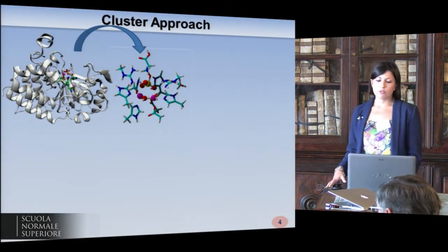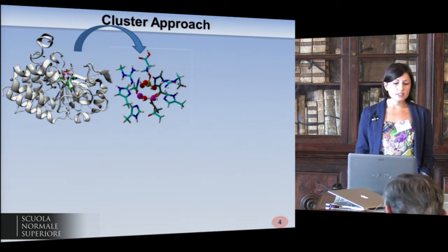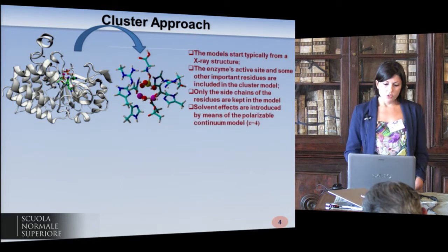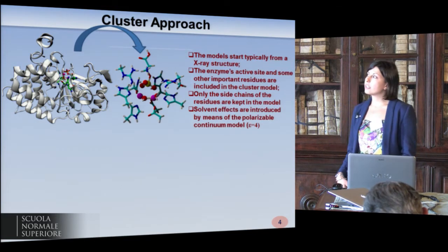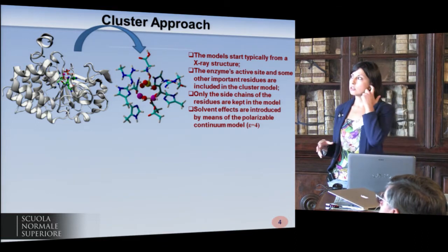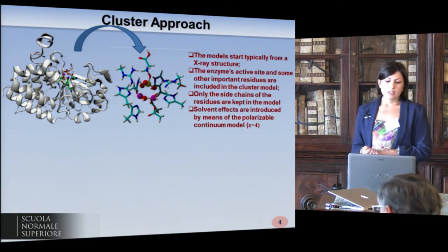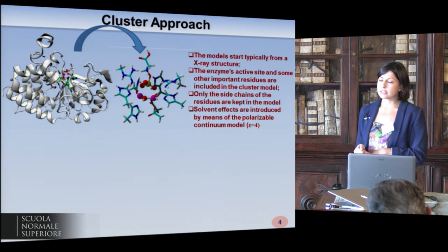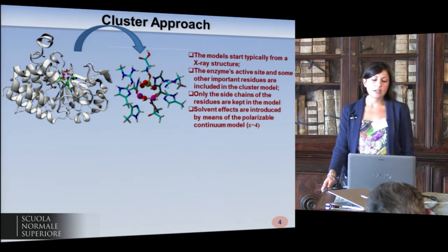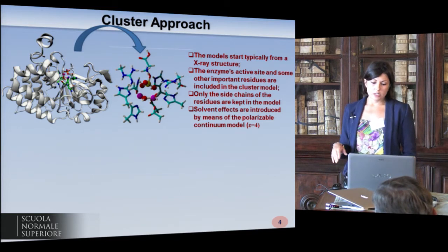How is it possible to study this kind of reaction mechanism? We use the so-called cluster approach, which gives us the opportunity to investigate in detail the reaction mechanism by considering only a limited part of the enzyme — the active site. Generally, the model starts from an X-ray structure, though it's not an absolute requirement. The enzyme's active site and some other important residues are included in the cluster model, keeping only the side chains of the residues, and we also take into account the effect of the rest of the enzyme using a continuum model.